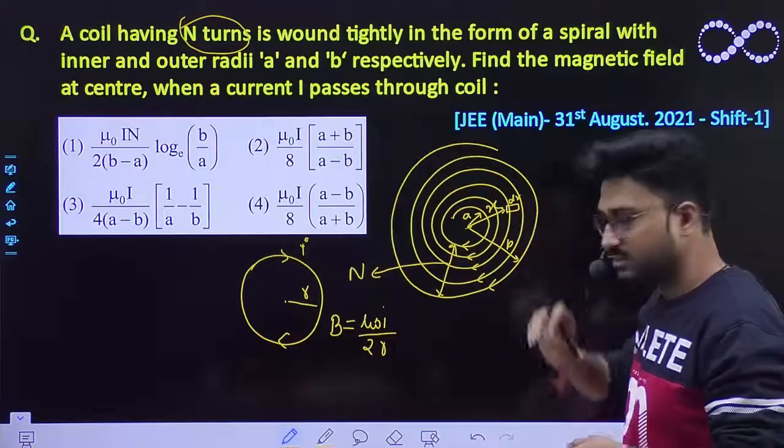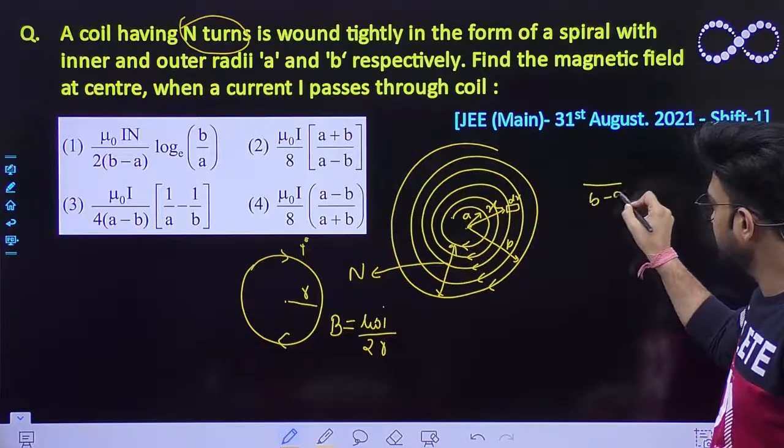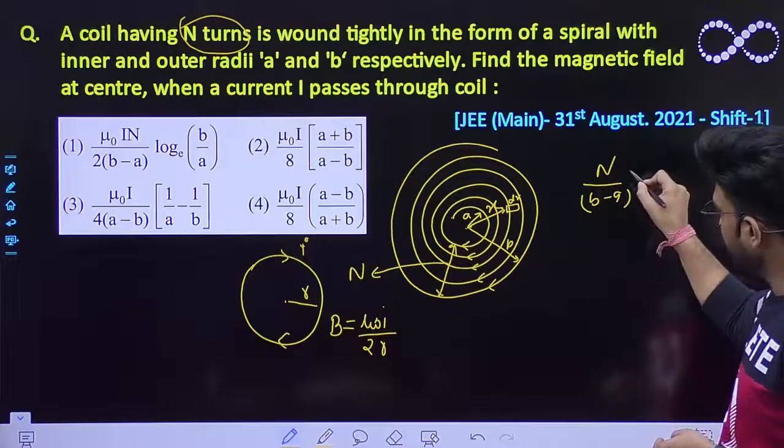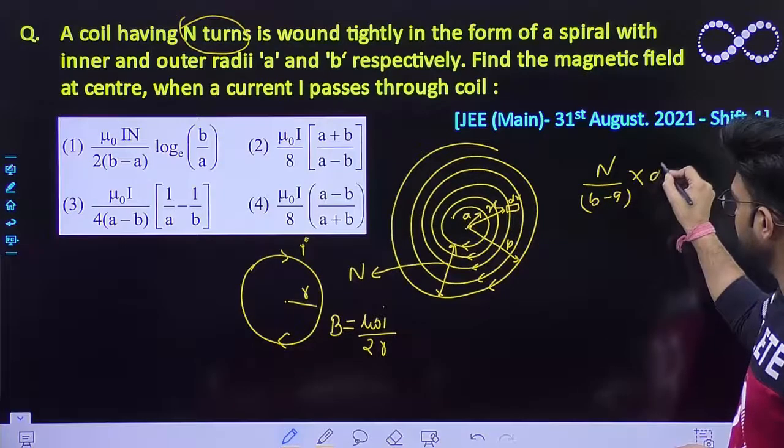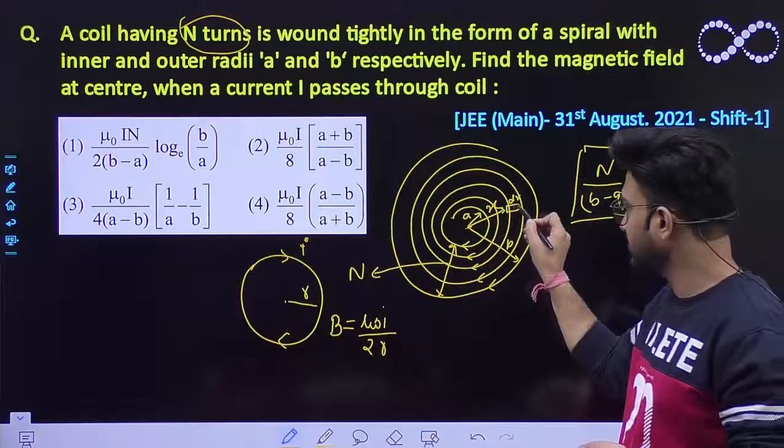We know that in the length B minus A, you would be having N number of turns. So what would be the number of turns in dx length? It would be N/(B-A) dx. So this is the number of turns you will be getting in dx length.